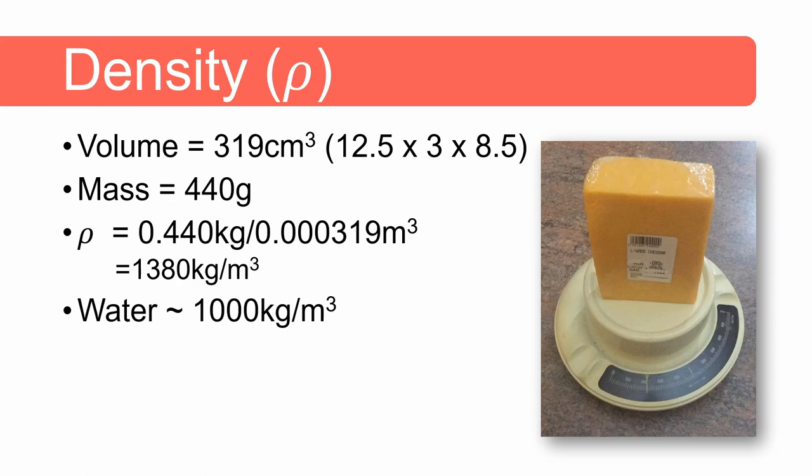Water's density is approximately 1000 kilograms per cubic meter. In fact the exact value is 997 kilograms per cubic meter at 25 degrees celsius and air's density is 1.18 kilograms per cubic meter.